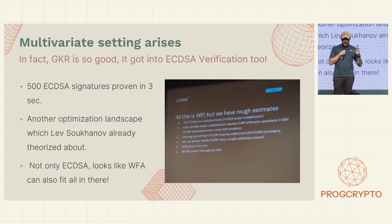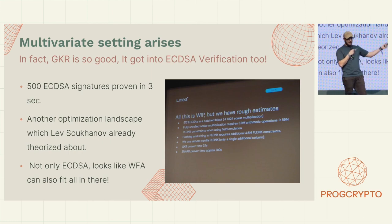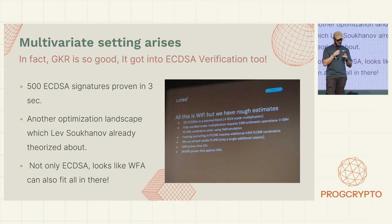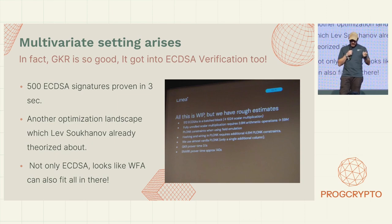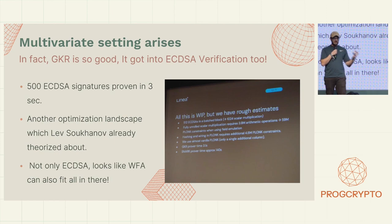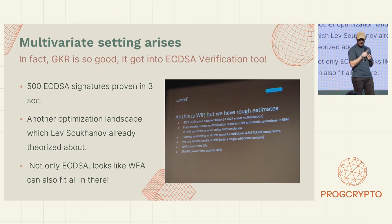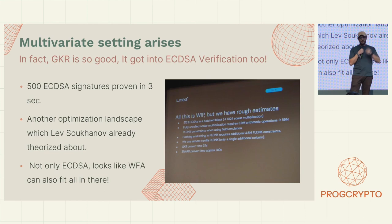Finally, nowadays people are playing with GKR for ECDSA verification, and they've achieved an outstanding result: 500 ECDSA signatures proved in three seconds. Lev, who is also here with us, already theorized about wrong-field arithmetic and related things. It looks like not only ECDSA but also wrong-field arithmetic is arriving here.